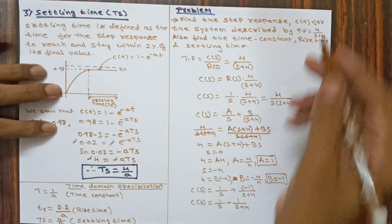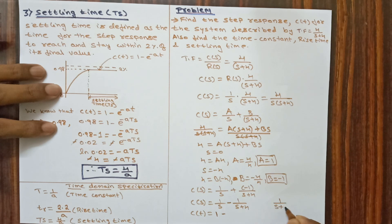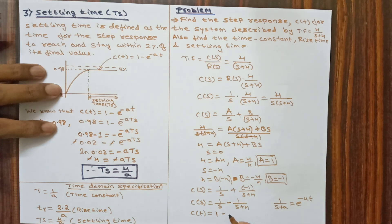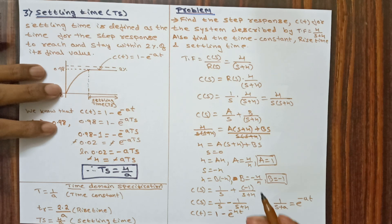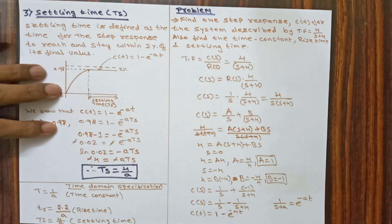Applying inverse Laplace transform: the inverse of 1 by s is 1, and the inverse of 1 by (s plus a) is e power minus at. Here a equals 4, so the inverse of 1 by (s plus 4) is e power minus 4t. Therefore C(t) equals 1 minus e power minus 4t.